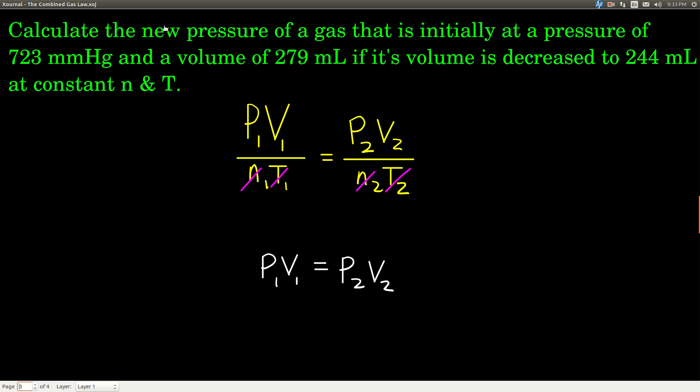Its volume is decreased, so its new volume, after it changed, is 244 milliliters. We want to find the new pressure. So the first thing we do is figure out what's not changing and I tell you in this case that N and T don't change, so we cross them off. When we cross them off, what we have left is a simpler gas law. This ends up being Boyle's law where N and T are constant, but it doesn't matter, it's one of the gas laws.